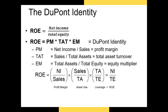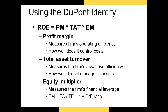The last topic for this part of the Chapter 2 material is the DuPont identity. Many times ratios for a firm give a conflicting picture of performance. The DuPont identity provides a way to break down ROE and investigate what areas of the firm need improvement. It indicates that a firm's return on equity depends on three characteristics: operating efficiency as proxied by the profit margin, asset use efficiency as proxied by total asset turnover, and financial leverage as proxied by the equity multiplier.